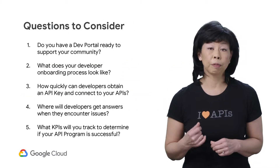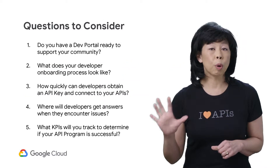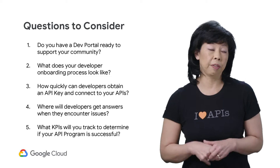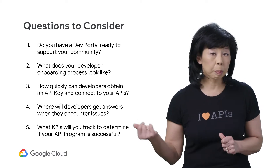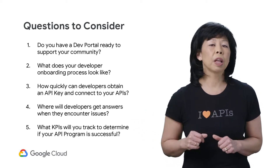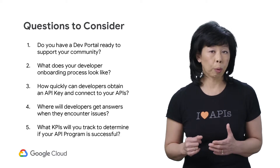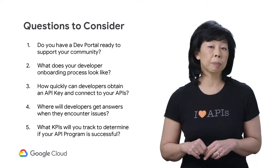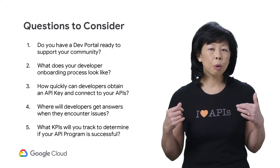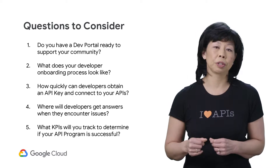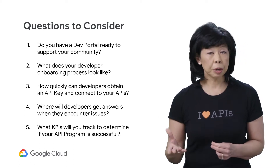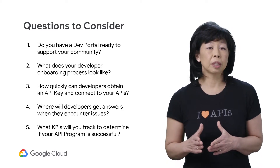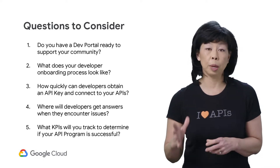Once you understand who is a part of your community, there are five questions organizations must consider. What is the channel or medium by which you will support your developer community? Is there a developer portal available? What is your developer onboarding process? Does the time for onboarding slow down the time for application development? How quickly can your developers obtain an API key to get started? How will developers get answers to questions? And finally, how will you measure the success of your program? Answering these questions will help you formulate the strategies needed to increase adoption of your API program.